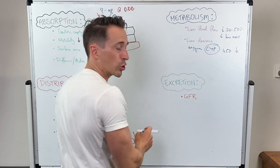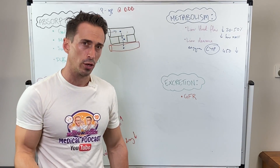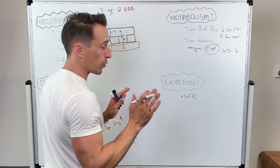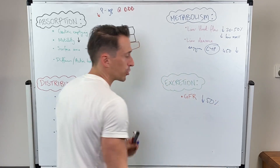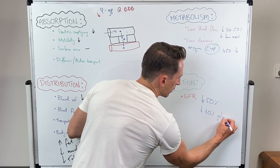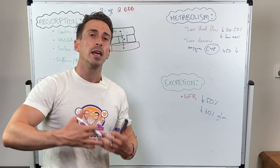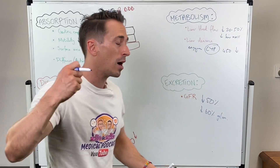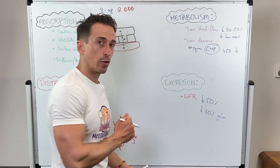Moving on to excretion — the clearing of the drug and its metabolites from the body. This occurs predominantly through the kidneys via renal excretion, and is primarily dependent on glomerular filtration rate (GFR). GFR is significantly reduced in older people; by age 80, it is reduced by about 50% and approximately 60% of glomeruli — the filtration subunits — have been lost. We need an appropriate measure of GFR: creatinine is commonly used, but since lean muscle mass is reduced in older people, an alternative measure may be needed to accurately assess drug clearance.